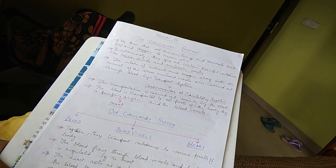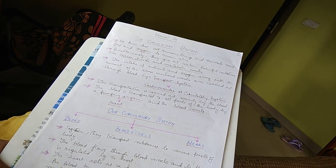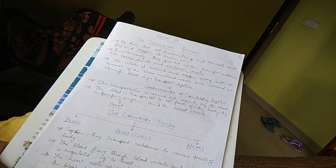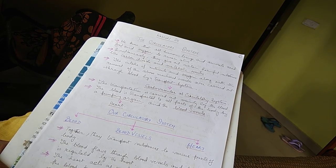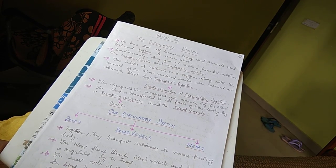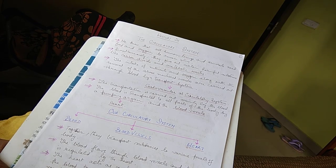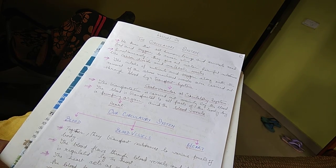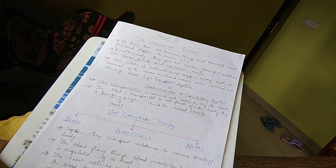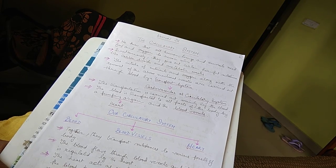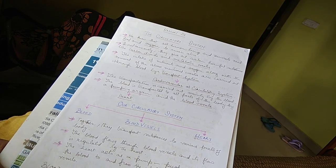The circulatory system is divided into blood, blood vessels and heart. Together, they transport substances to various parts of the body. The blood flows through blood vessels and its flow is regulated by the heart. The heart acts as a pump. It pushes and receives the blood to and from the whole body through the vessels.